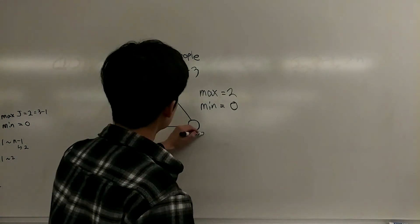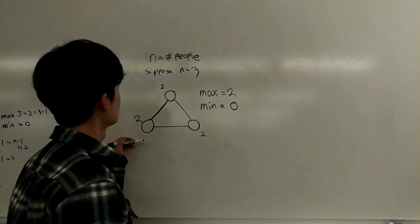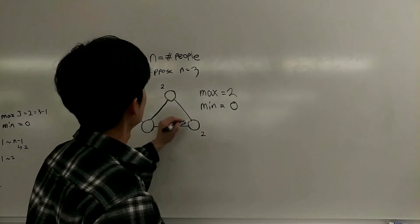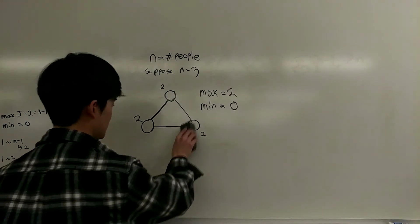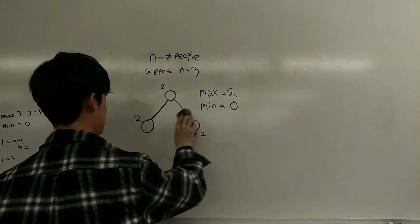If we complete the connection, everybody will have exactly two friends, and this still complies with the pigeonhole principle, because at least two people have the same number of friends. This example should work with any number that we choose N to be.